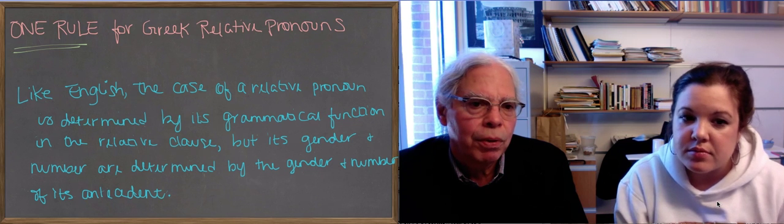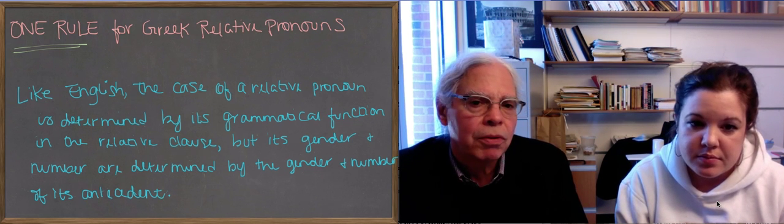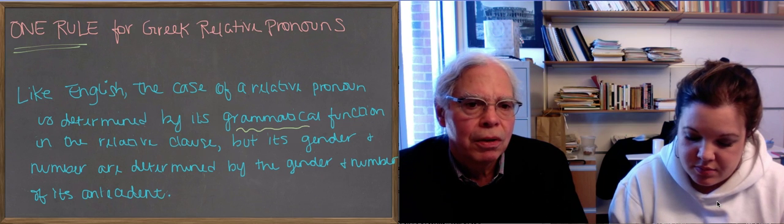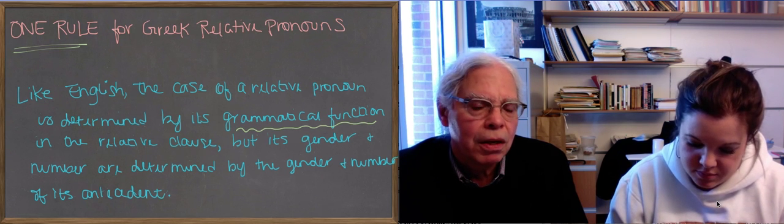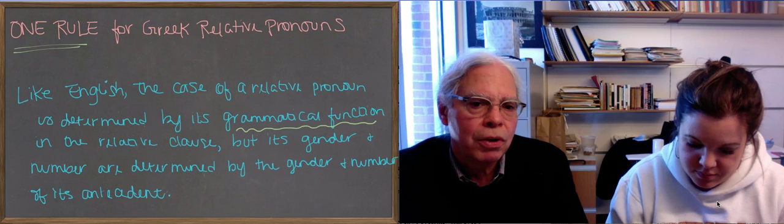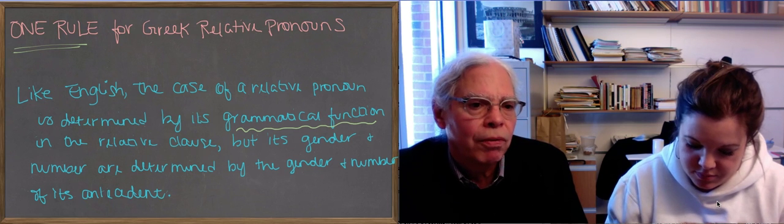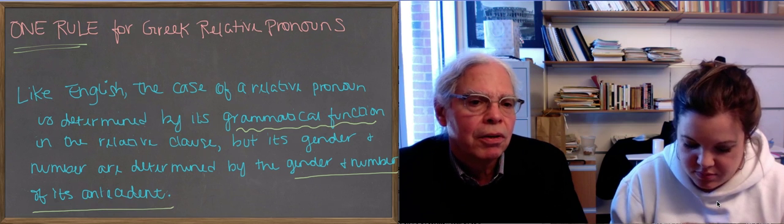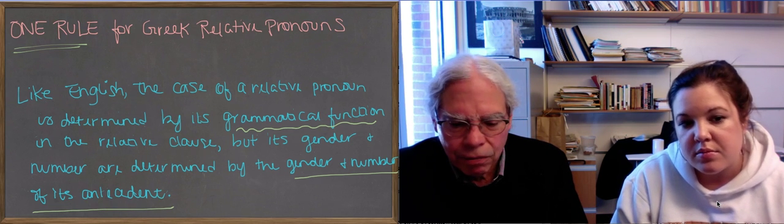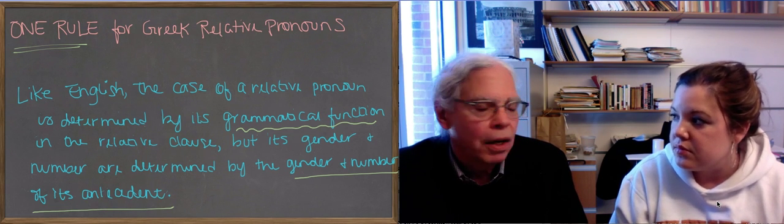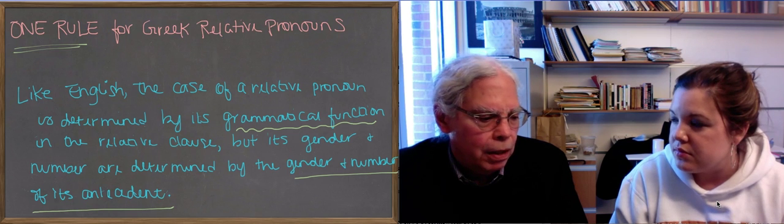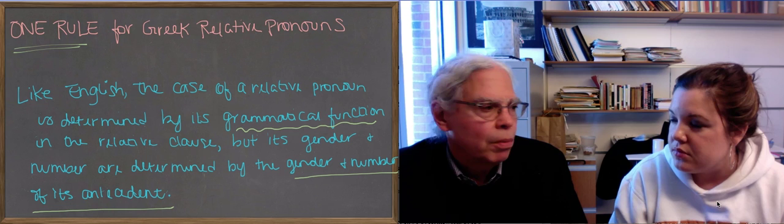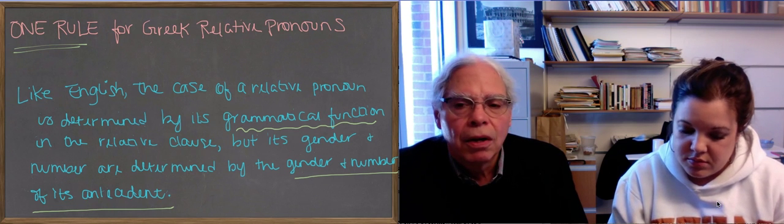In English, the case of a relative pronoun is determined only by its grammatical function in the relative clause. But its gender, in the case of Greek, and number are determined by the gender and number of the relative pronoun's antecedent. English doesn't have gender and number, Greek does. And they're used to specify and remove ambiguities about who the antecedent is of a relative pronoun.